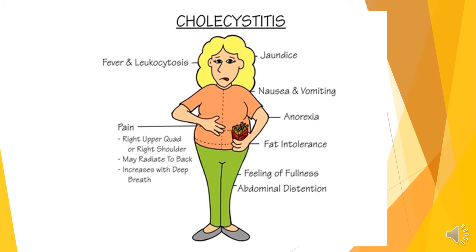This is a quick picture of how your patients are going to present. They can be jaundiced, with complaints of nausea and vomiting, and anorexic — although they tend to be larger, they may have feelings of fullness with abdominal distension and be unable to eat. They will have fever with leukocytosis, and typically their pain is right upper quadrant pain or right shoulder pain radiating to the back, which typically increases with deep breaths.